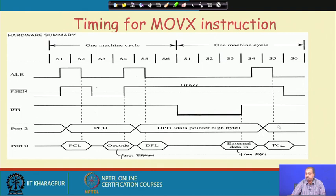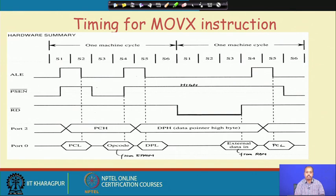That completes the MOVEX instruction — since it is reading the content of a memory location into the A register, the read bar signal is given. Similarly, if you want to write the content of the A register onto external memory, the write bar signal should be given, and data comes from the accumulator register rather than from external data input.